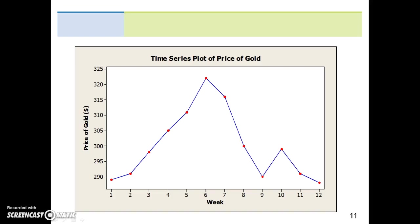This is what the results should look like, a time series plot of the price of gold. The horizontal axis is the time in weeks and the vertical axis is the price of gold.